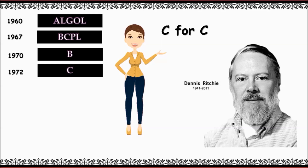C was developed by Dennis Ritchie at Bell Laboratories in the year 1972. It added new features and concepts like data types, and was developed along with the Unix operating system.